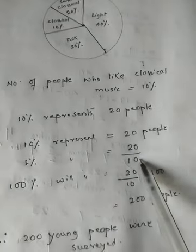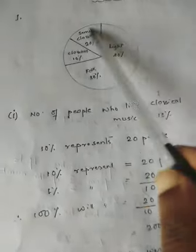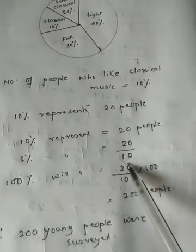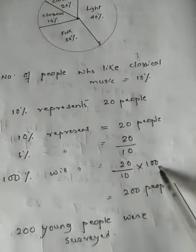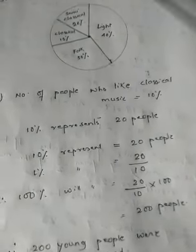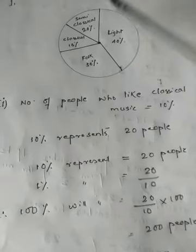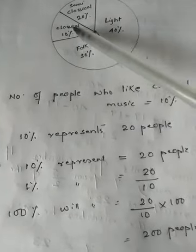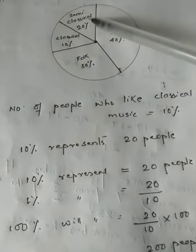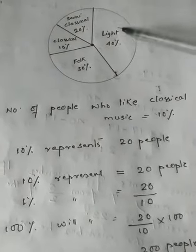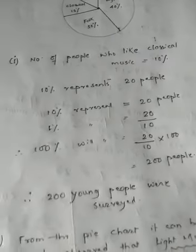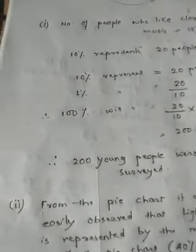So 1 percent will represent 20 divided by 10 people. Now 100 percent represents the total, so 100 percent will represent (20 / 10) × 100, which reduces to 200 people. So altogether 200 people were surveyed, among which 10 percent admired classical music, 20 percent semi-classical, 40 percent light music, and 30 percent folk music.